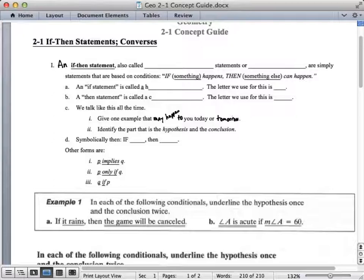So an if-then statement. You've got to know about these. It's called a conditional statement or simply called conditionals. These are statements that are based on conditions. If something happens, then something else will happen. It's an if-then statement. We talk like this all the time. The if-statement part is called a hypothesis. The letter that we will use for this, abbreviate for it, is actually P. And then the then statement is called a conclusion. You've heard these two words, hypothesis and conclusion, before, I bet.